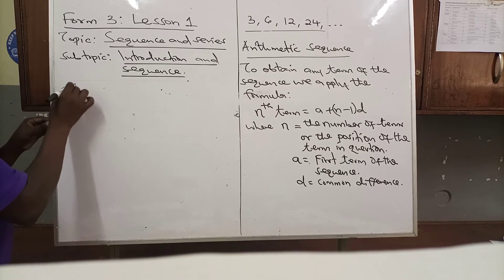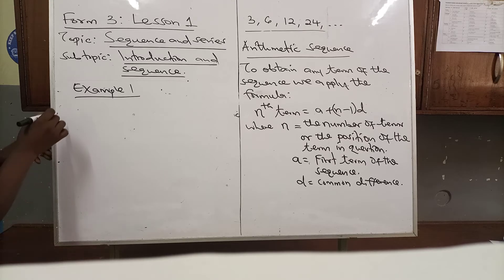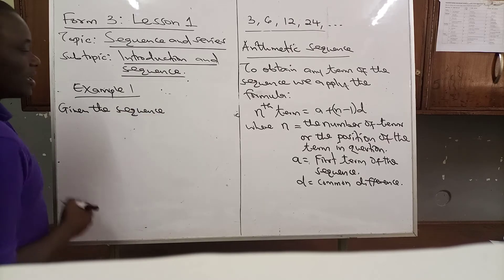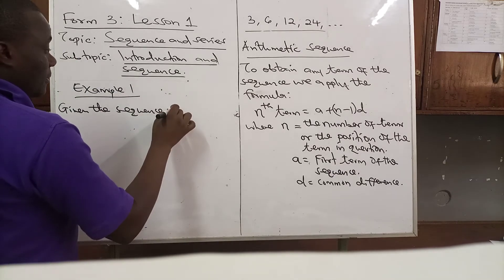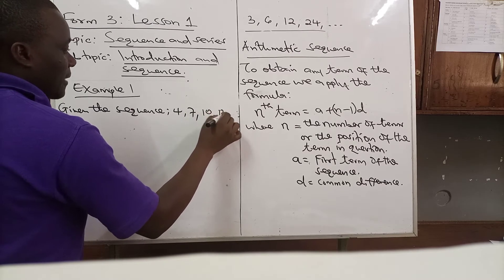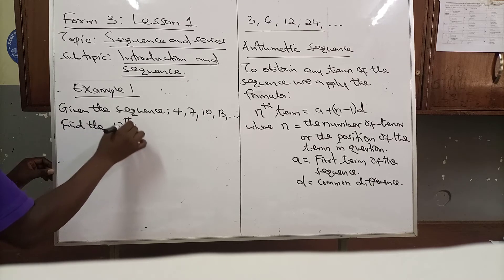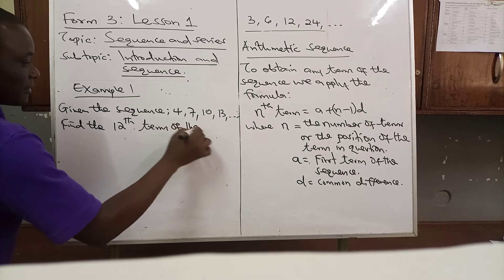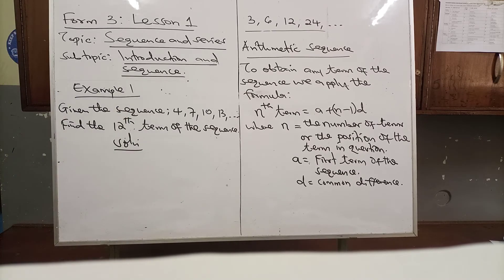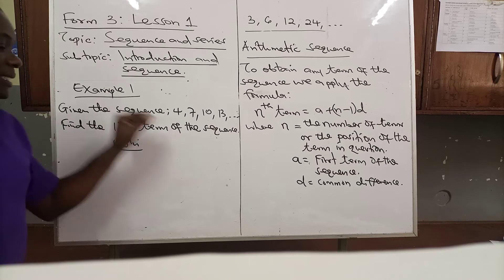Example one: given the sequence 4, 7, 10, 13 — find the 12th term of the sequence. Solution: we have been given the first four terms of the sequence and we are being asked to find the 12th term.